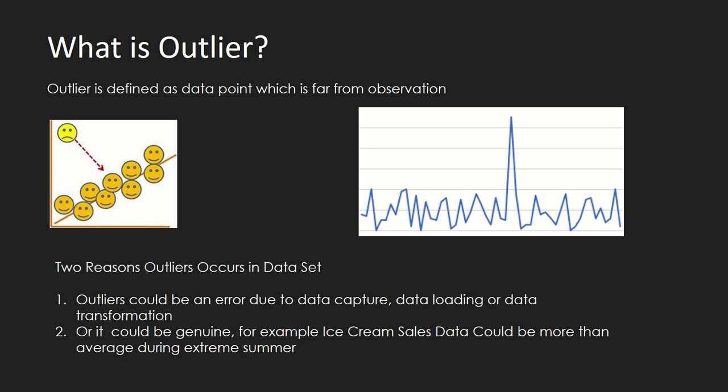Now, what could be the cause of having an outlier in your dataset? There could be two causes. The first cause is some error — maybe while you were capturing the data you made some error, or maybe while loading the data or doing some transformation there was a bug in the transformation script, and because of that there is an outlier.